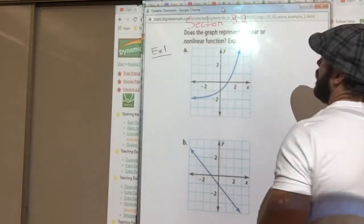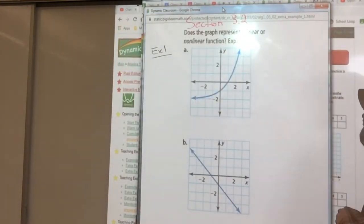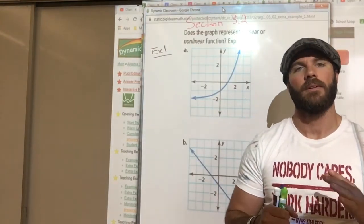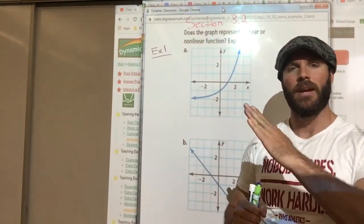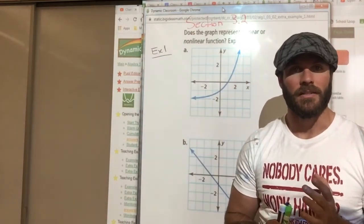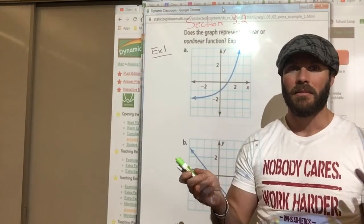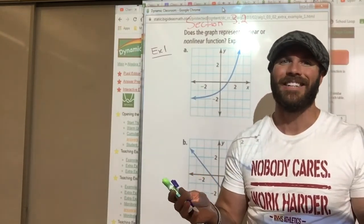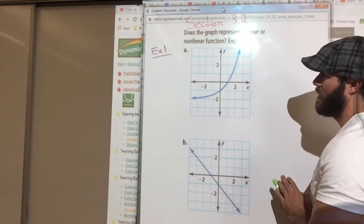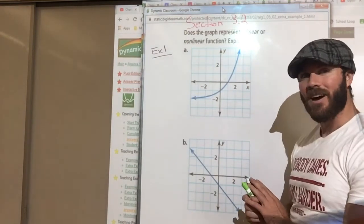So a linear function is where you have a constant rate and a nonlinear is when it's not so constant. Linear with the word line in it. Linear means it's a straight line. Nonlinear means it's not a straight line.